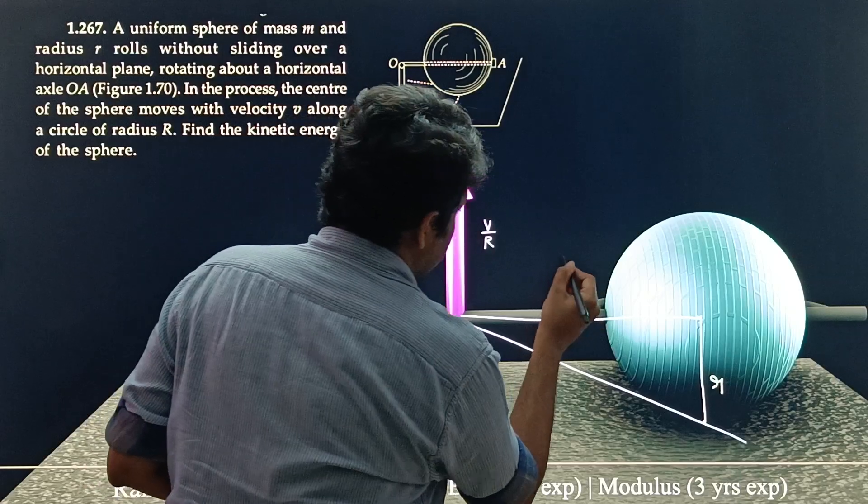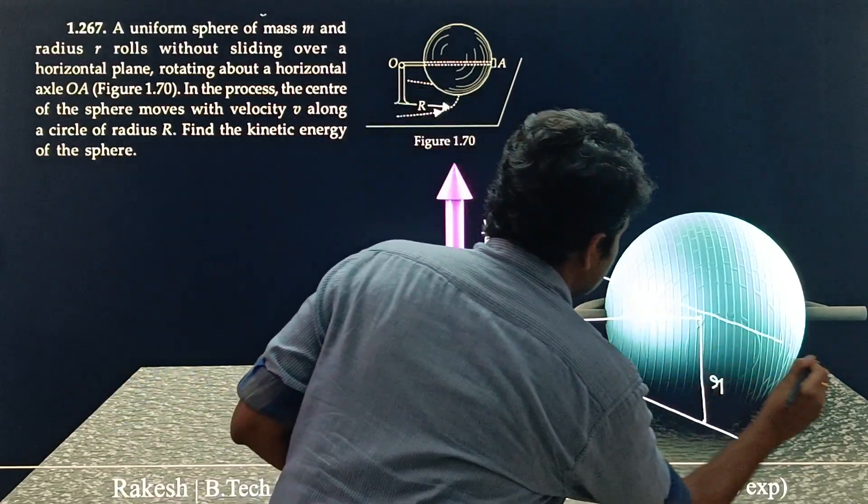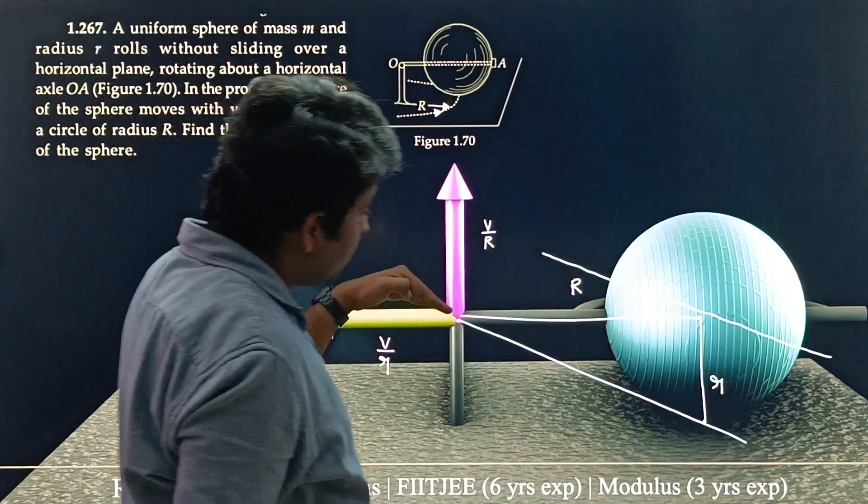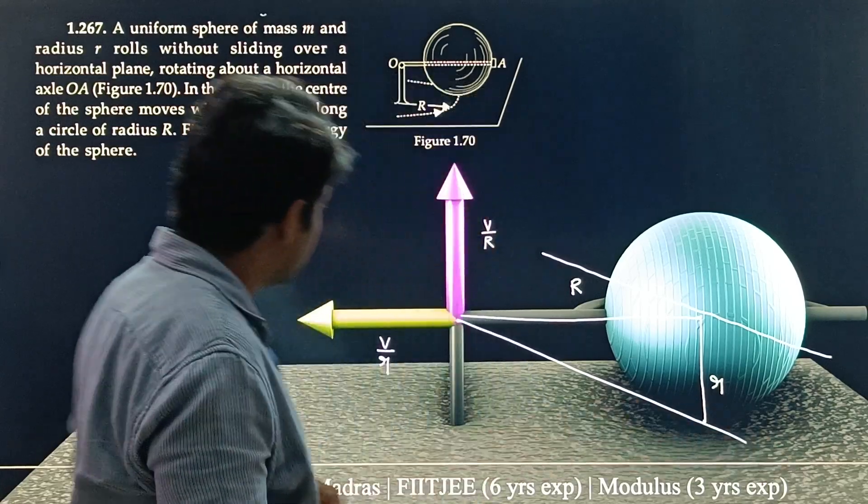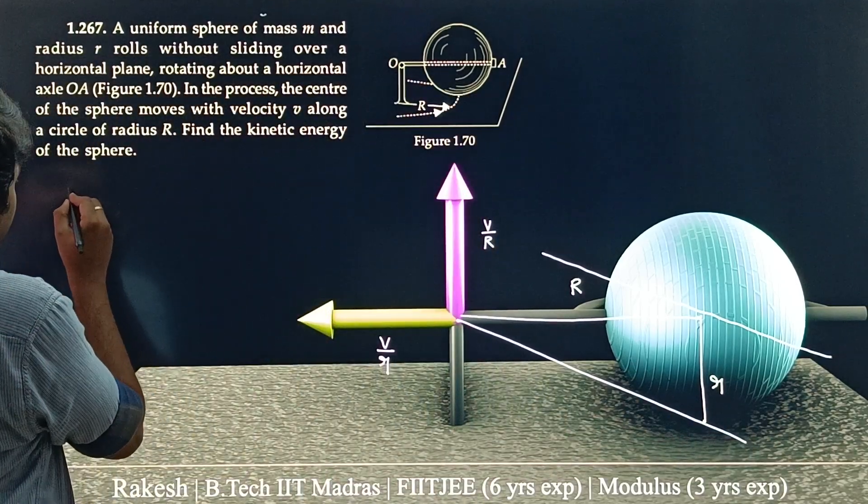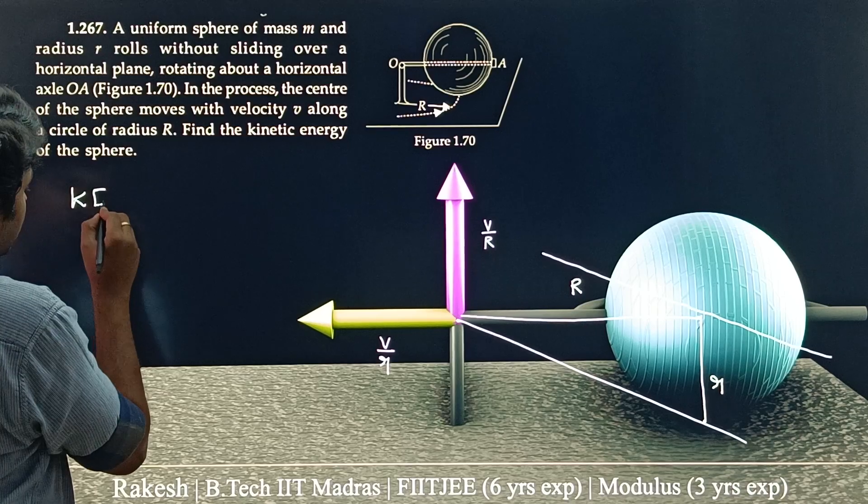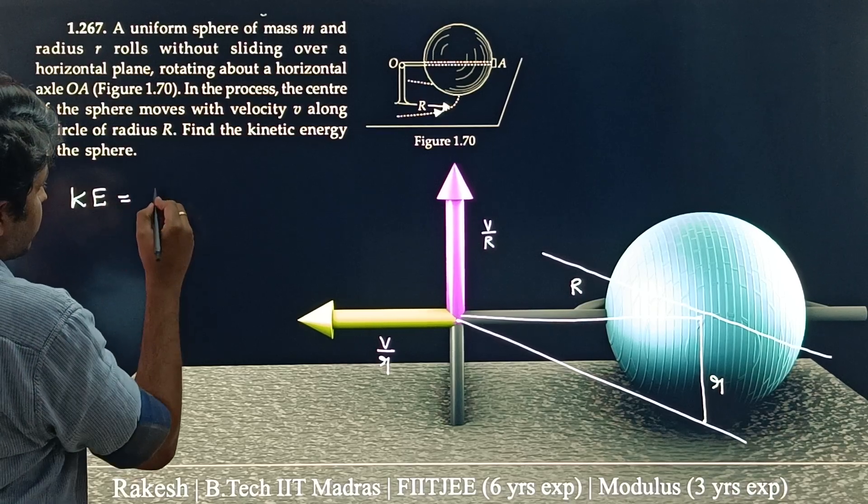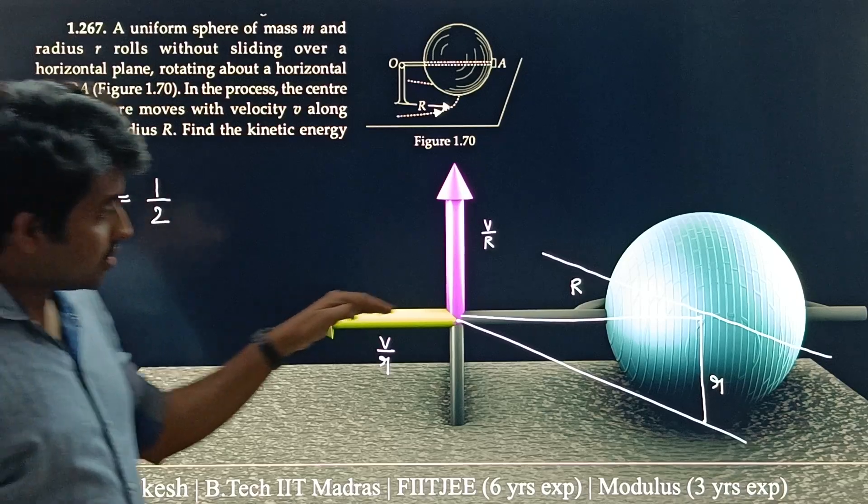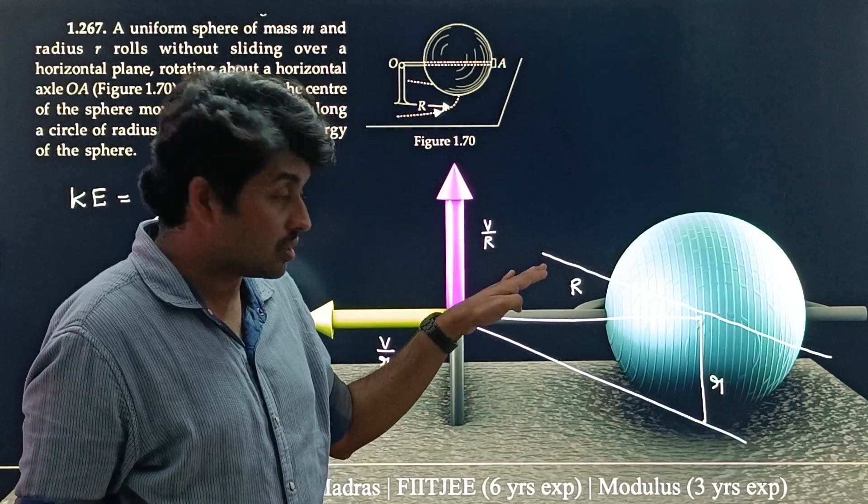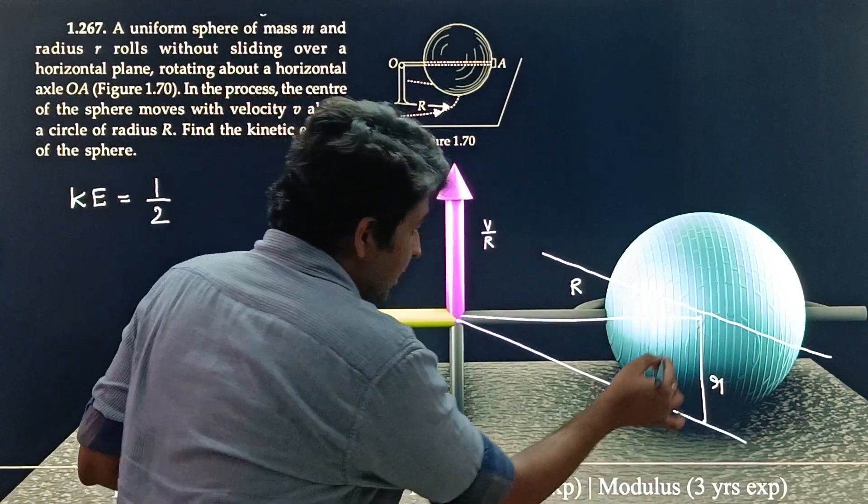Let us just write that right now. This is radius capital R. This is radius of the sphere which is small r. The moment of inertia, I will just draw a line parallel to this. And the moment of inertia about this axis is, so I will write here, finally, kinetic energy equal to half.